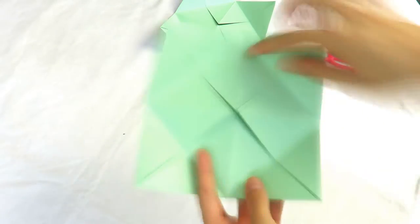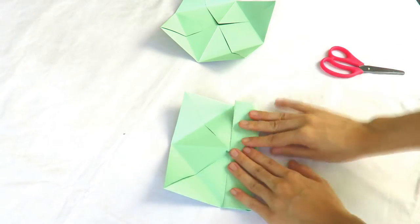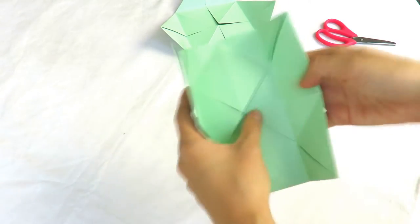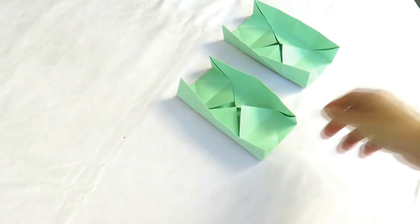So you want to open up the flaps and begin to fold one side towards the center. Then, do the same on the opposite side. These would serve as the side walls for your box.